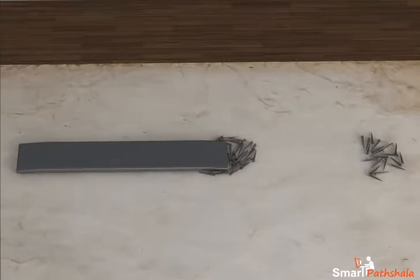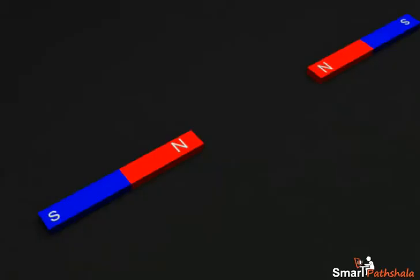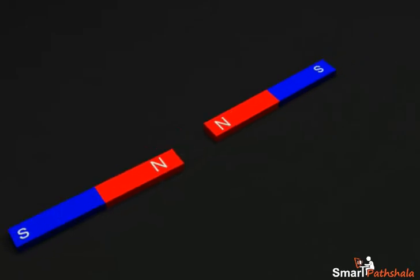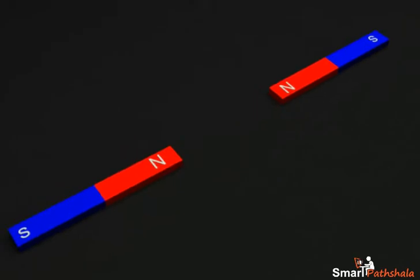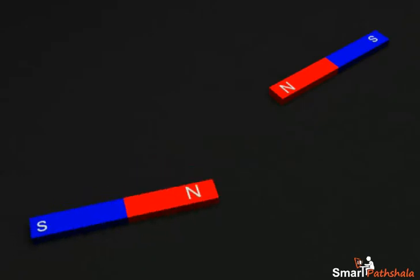Let us understand about the magnetic force with an example. Take a pair of bar magnets. Now bring the two red ends of the magnets near to each other. Make sure that the two magnets do not touch each other. Now you find a force generated which repels both the magnets away from each other.